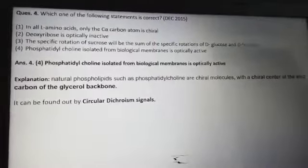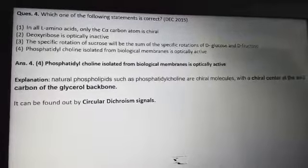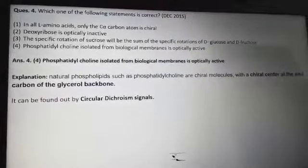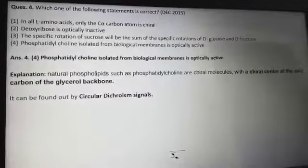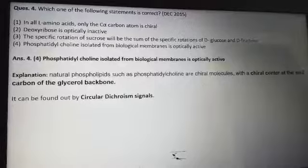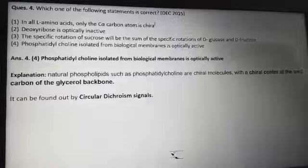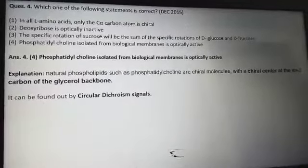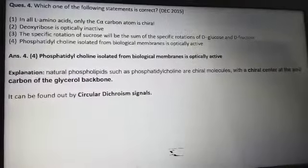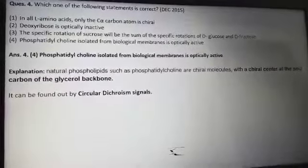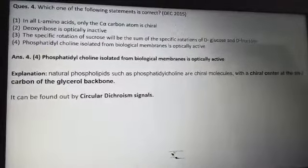The next question, from December 2015, asks which of the following statements is correct. Option one — all L-amino acids only have a chiral C-alpha carbon — is incorrect, because molecules like lysine have no other chiral carbons. Option two — deoxyribose is optically inactive — is also wrong. Option three — the specific rotation of sucrose equals the sum of specific rotations of D-glucose and D-fructose — is also not correct, as it depends on the individual rotations in solution.